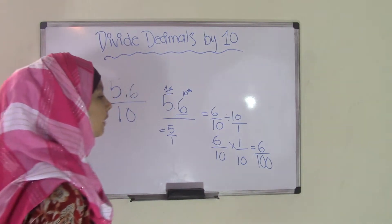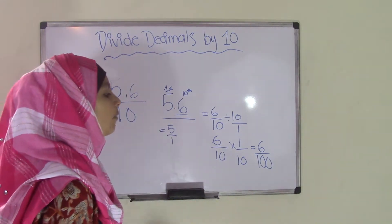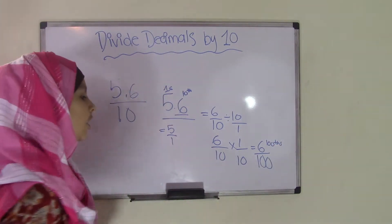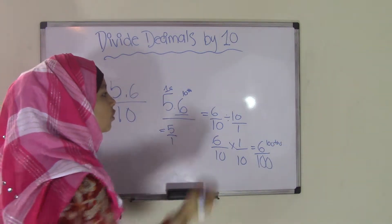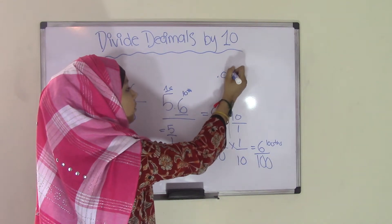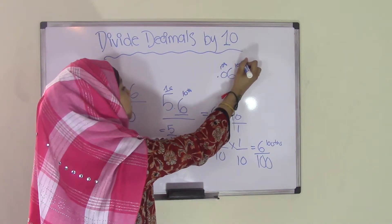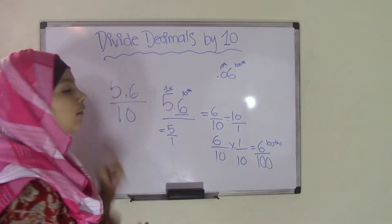That means the place value of 6 tenths has now become in the hundredths. That means 6 over 100 can also be written as 0.06, because the 0 is in the tenths place now, and 6 is in the hundredths place. So we're done with the 0.6.